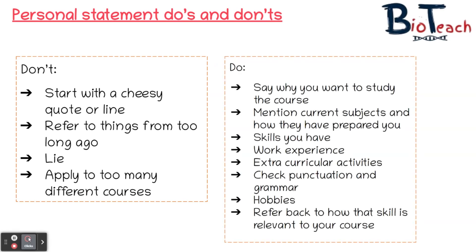Now for what you definitely should be doing. First, make sure you've said why you want to study the course. Refer to your current subjects and say what you enjoy and why, the skills they've provided you with, and how that will help you at university. Include work experience, extracurricular activities or positions of responsibility if you've had any. Check spelling, punctuation and grammar, and show your statement to a few people — maybe a tutor or teacher — to get their input. Mention your hobbies, for example achieving grade 8 at piano or a black belt in karate, as evidence of discipline and determination. Ensure everything you mention is related back to how it makes you suitable for your course.